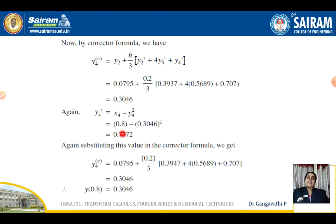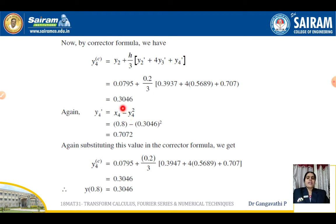Since the problem asks us to apply the corrector formula twice, we use it again with the new value of y₄'. The new y₄' is evaluated using the recent corrected value of y₄ = 0.3046. Substituting again into the formula, we get y(0.8) = 0.3046. This is how the corrector formula is applied twice.